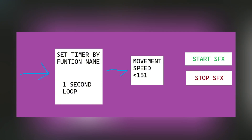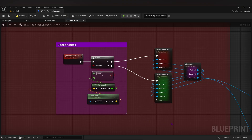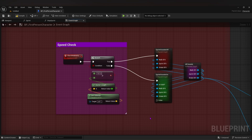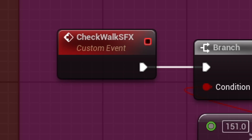My walk speed is 150, so if my character is moving at 151, it'll turn my sprinting sound effects on after a second. This has honestly worked great — my code is way simpler now and works way better than before. It's honestly strange how that is. I enjoyed when the game finally worked, but there was a lot of suffering in there too.